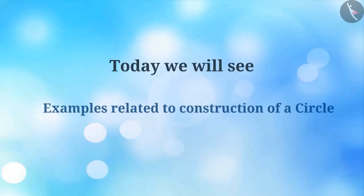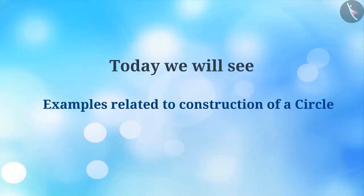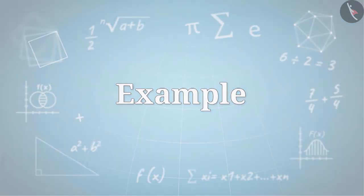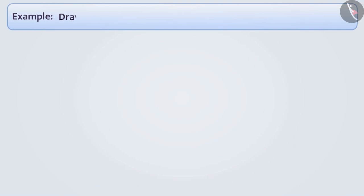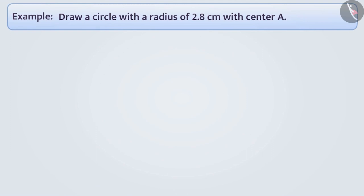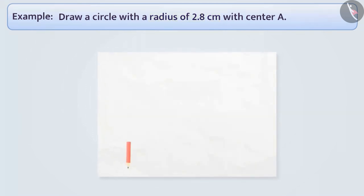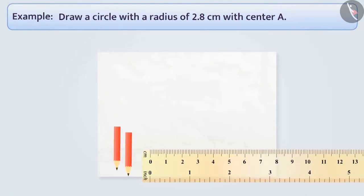Today, we will see some examples related to construction of a circle. Draw a circle with a radius of 2.8 cm with centre A. The radius of the circle is 2.8 cm, which tells us that the distance of any point on the circle from the centre is 2.8 cm. To construct a circle using the measurement of the radius, we will need a paper, two pencils, a ruler, and a compass.